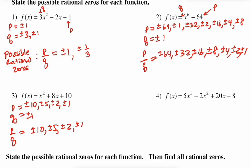Remember what we've done so far: we've looked at polynomials in factored form to get zeros, then used division when factoring was harder. Our main goal is to break up polynomials to put them in factored form. For number 4, the P list from constant 8 is plus or minus 8, 4, 2, and 1. Our Q comes from the lead coefficient of 5, giving us plus or minus 5 and plus or minus 1.